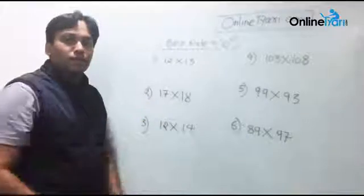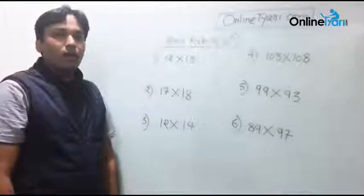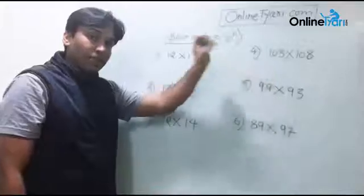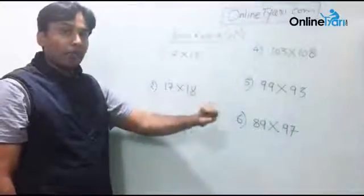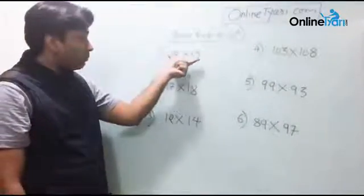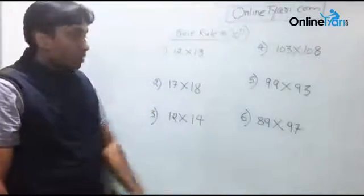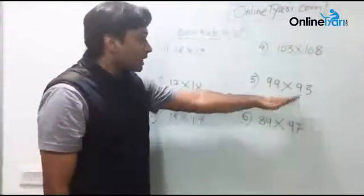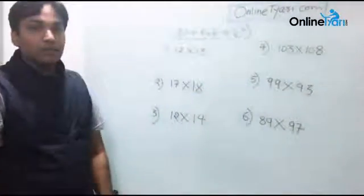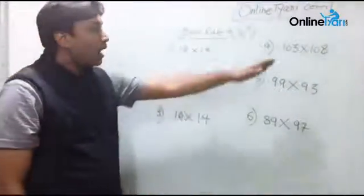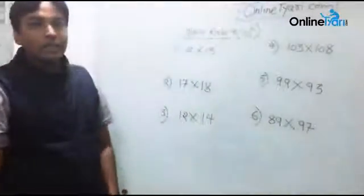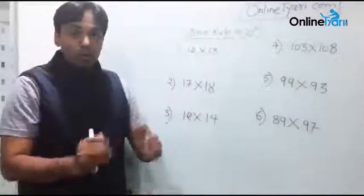What is the peculiar similarity out here? The similarity is: number one, these numbers should be close to each other. So if you see, 99 and 93 are getting multiplied - numbers are somehow closer to each other. 103 is getting multiplied with 108 - numbers are closer to each other.